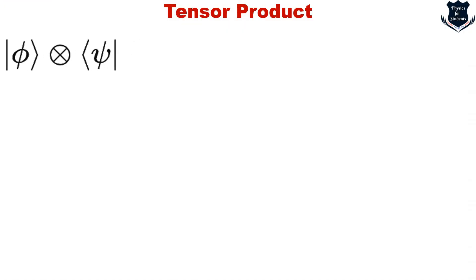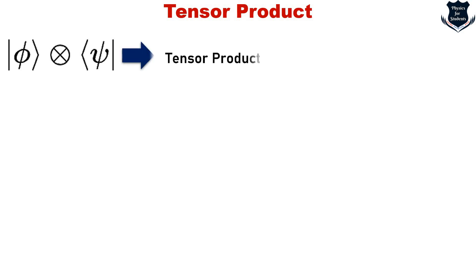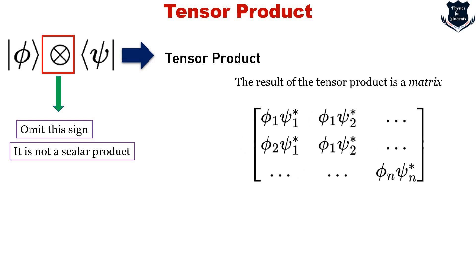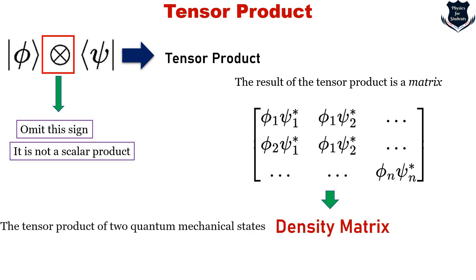The tensor product is generally given by a specific sign. The bra and ket vector operation creates a tensor product. We can omit this sign because, from Bra-Ket notation, it is immediately clear it is not a scalar product. The result of the tensor product is a matrix, and in the case of quantum mechanical states it is called a density matrix or density operator.